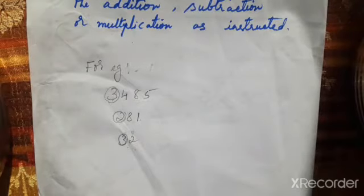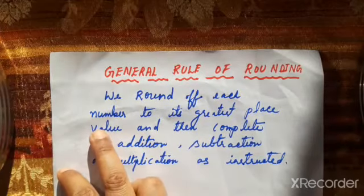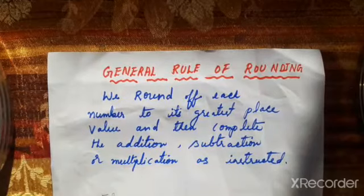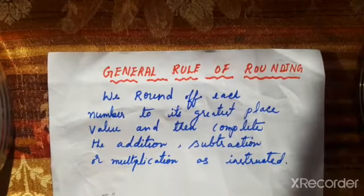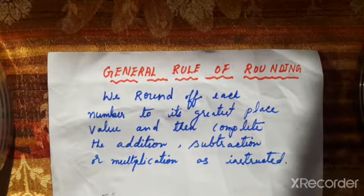So to estimate using the general rule: round off to the highest place value, then complete the operation. If addition is given, add the rounded numbers; if subtraction, subtract; if multiplication, multiply. Note — General rule of rounding: we round off each number to its greatest place value, then complete the addition, subtraction, or multiplication as instructed.